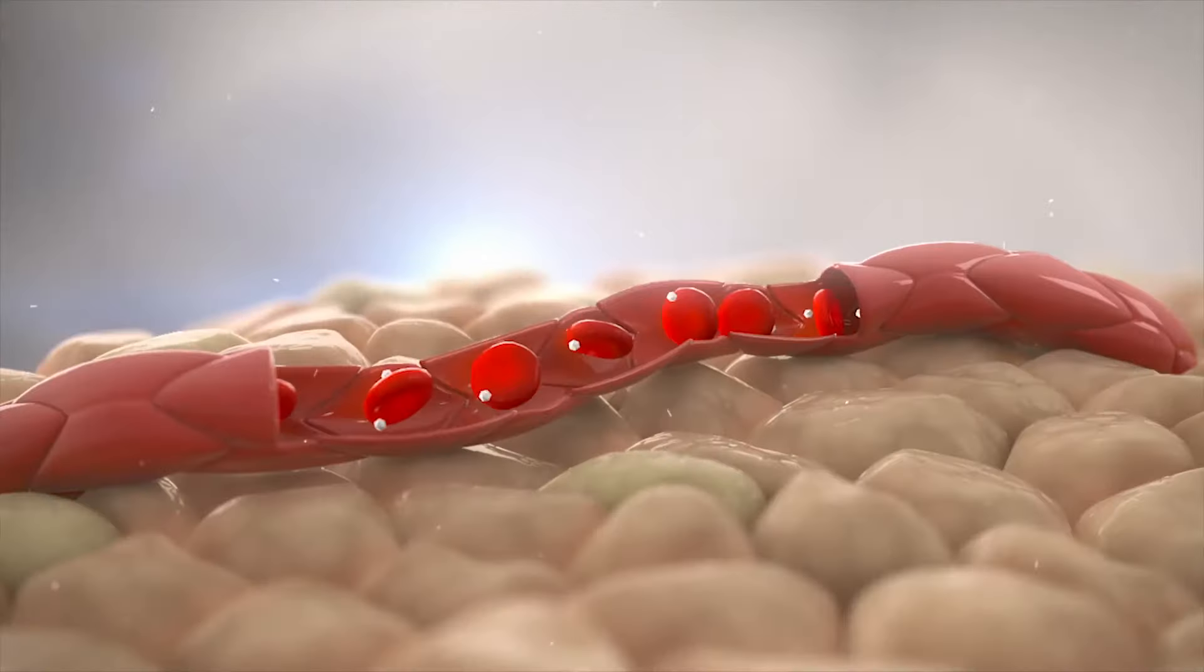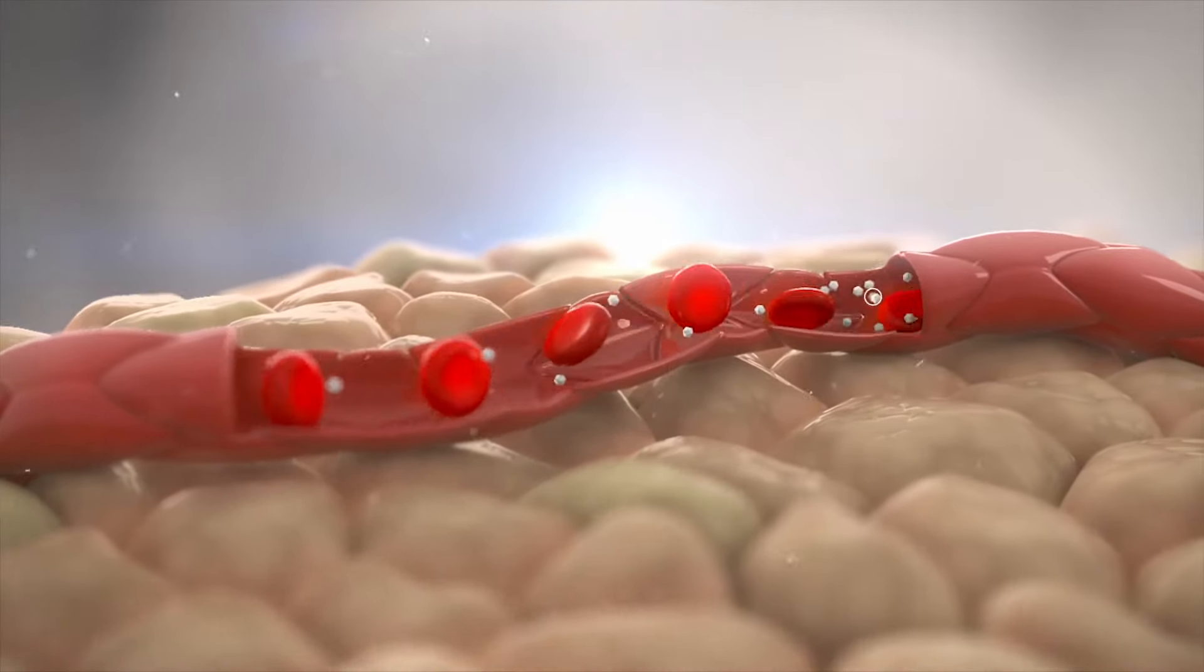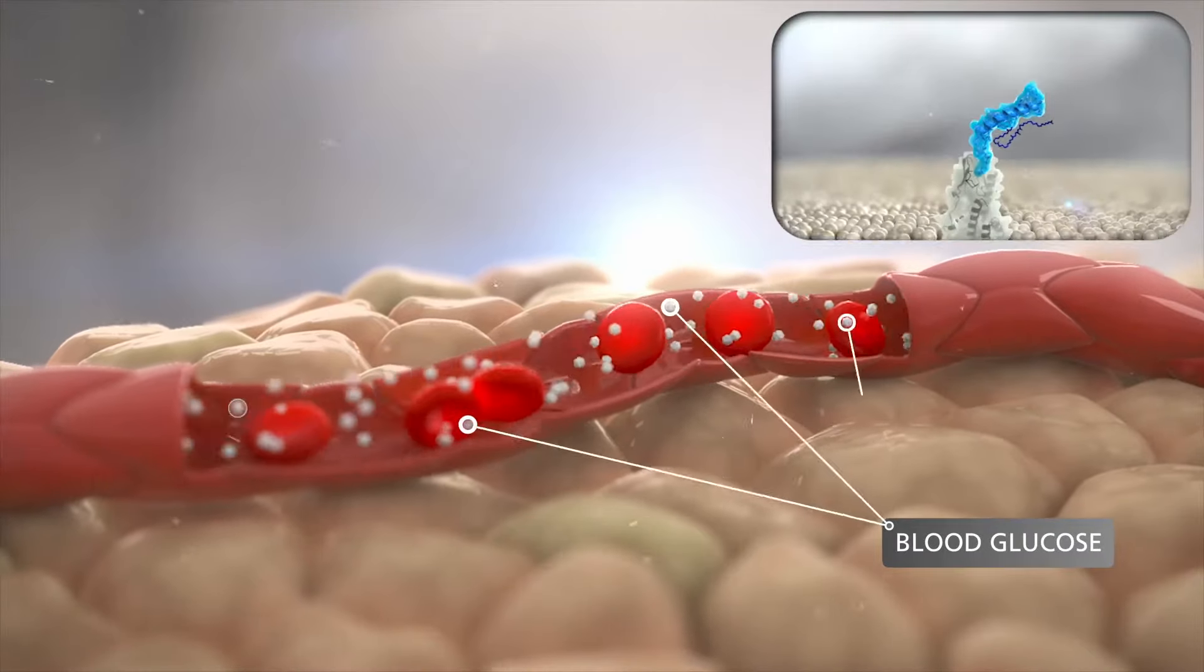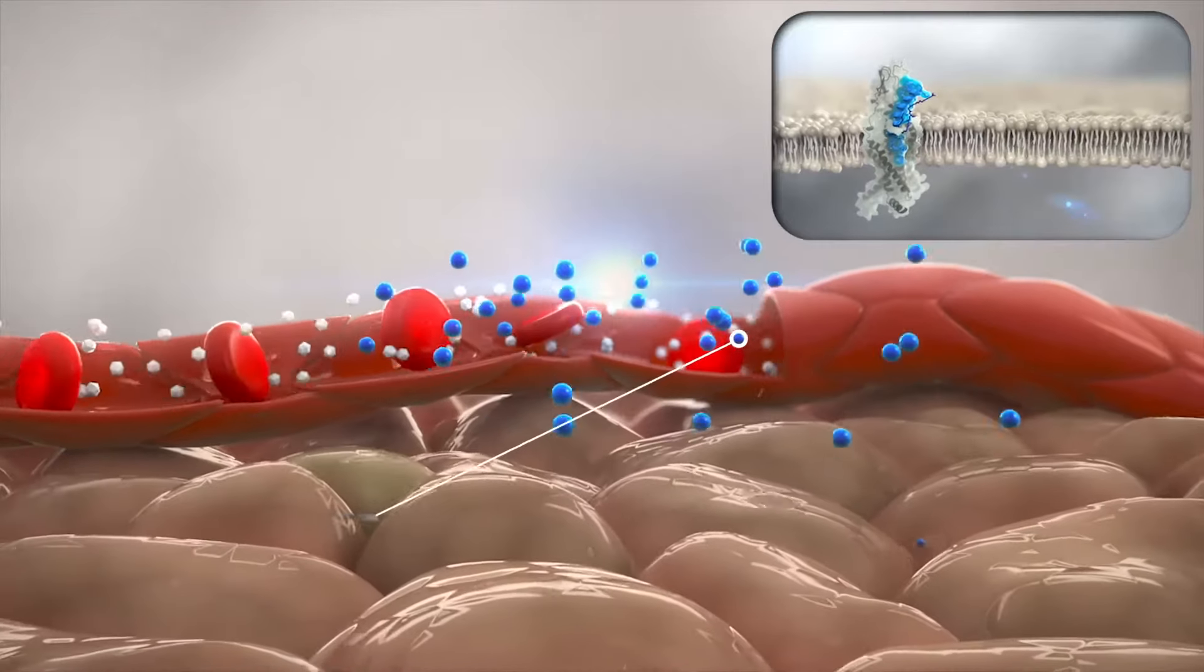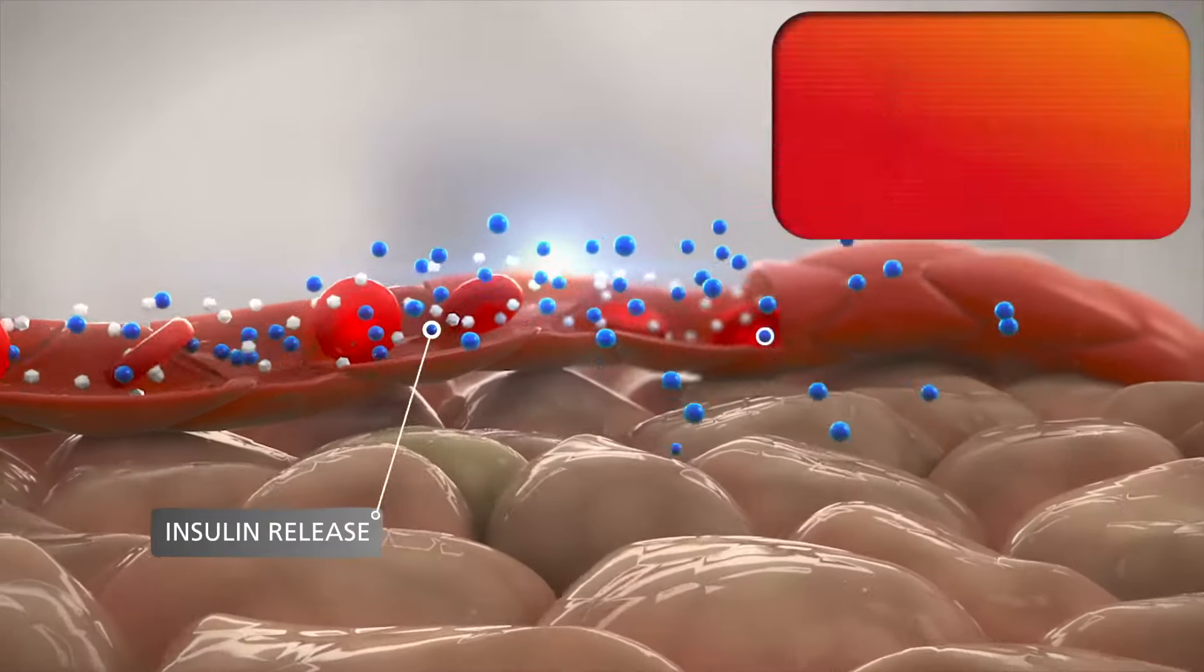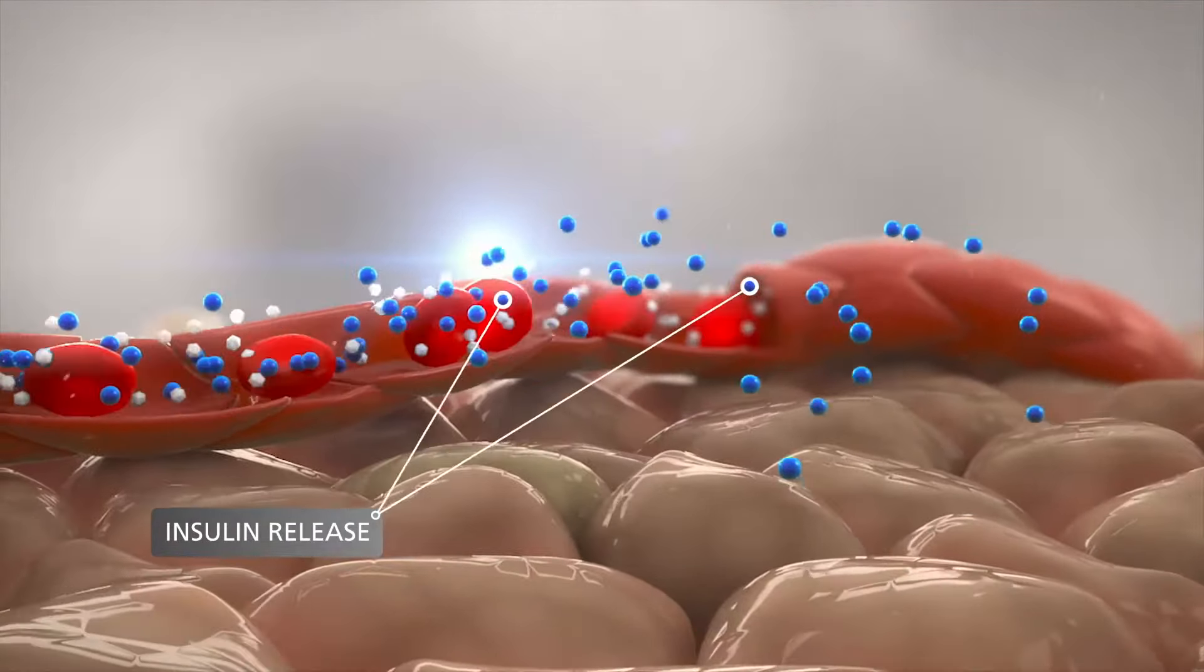When blood glucose is elevated, Ozempic increases insulin secretion and suppresses glucagon secretion versus placebo. These glucose-dependent effects combine to improve glycemic control while minimizing the risk of hypoglycemia.